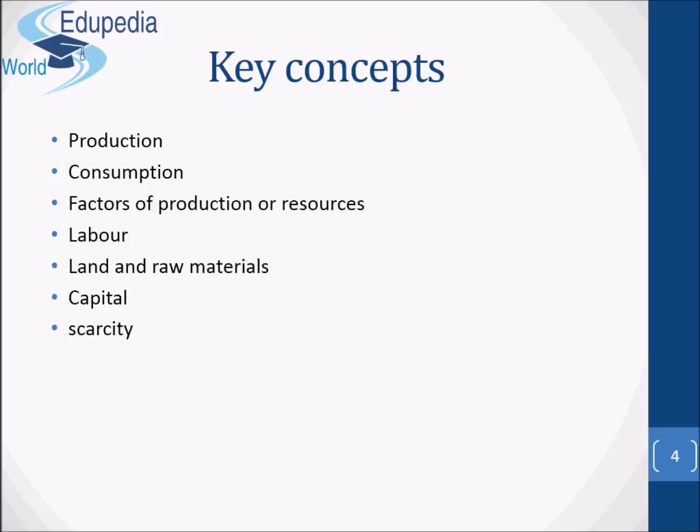We focused also on labour, which represents all forms of human input, both physical and mental, into current production. Land and raw materials are inputs into production that are provided by nature — for example, unimproved land and mineral deposits in the ground. Capital represents all inputs into production that have themselves been produced — for example, factories, machines and tools.